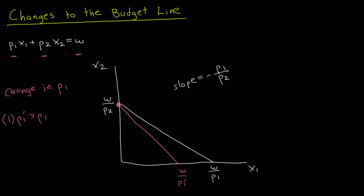Now consider the case where the price of good one decreases to P1 double prime, which is less than the original price P1. Using the same logic, the vertical intercept does not change since it doesn't depend on P1. However, because P1 is decreasing and is in the denominator, the horizontal intercept moves further to the right to W over P1 double prime. The slope becomes flatter. So the budget line rotates counterclockwise, while in the first case where the price increases, the budget line rotates clockwise.